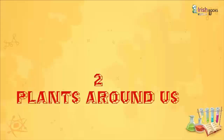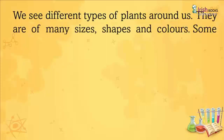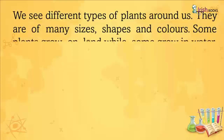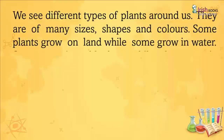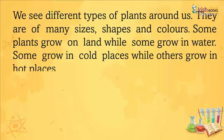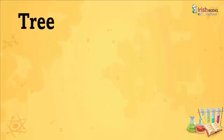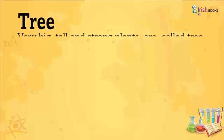Chapter 2: Plants Around Us. We see different types of plants around us. They are of many sizes, shapes and colors. Some plants grow on land while some grow in water. Some grow in cold places while others grow in hot places. There are different types of plants.